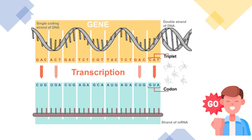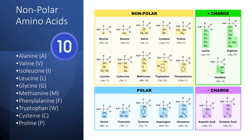Translation occurs at the ribosome, which consists of ribosomal rRNA and proteins. In translation, the instructions in mRNA are read, and transfer tRNA brings the correct sequence of amino acids to the ribosome. Then rRNA helps bonds form between the amino acids, producing a polypeptide chain. After a polypeptide chain is synthesized, it may undergo additional processing to form the finished protein. Within the newly generated polypeptide sequence prior to its processing at the Golgi apparatus, we are able to group the 20 common amino acids into four regular categories.